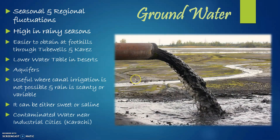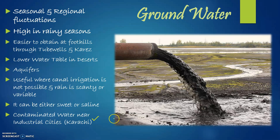The last point is contaminated water near industrial cities, which relates to water pollution. If groundwater exists near an industry, it may be contaminated. A perfect example from Pakistan is Karachi, which is an industrial area, making its groundwater more likely to be contaminated due to industrial pollution.